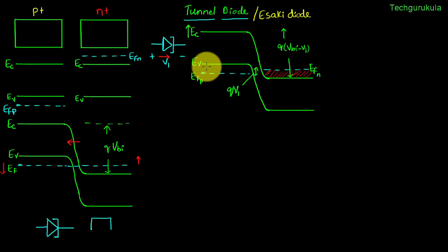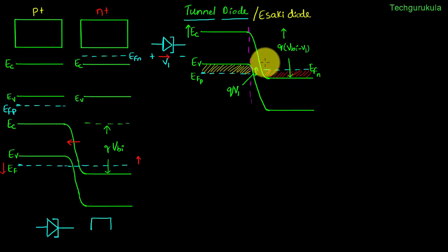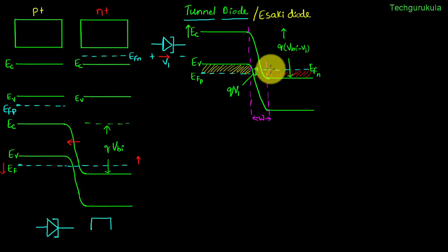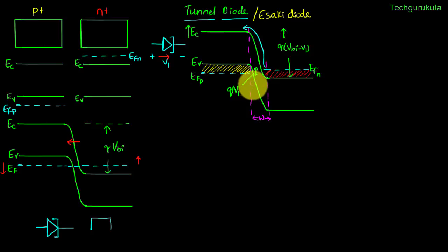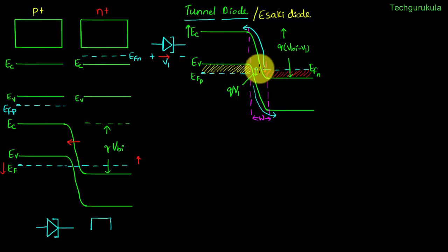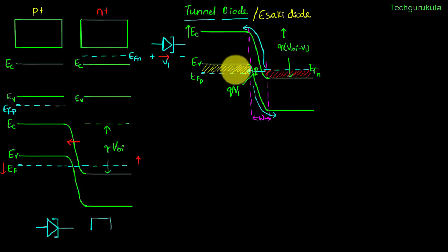On the p-side the Fermi energy level will have a lot of holes. Because the diode is heavily doped, the depletion width would be really very small — typically in tunnel diodes it would be in a few angstroms or nanometers. In general, electrons are supposed to surmount the barrier to go to the other side. But in this case, electrons are at a particular energy and there are a lot of empty states on the other side separated by a very small barrier width. So instead of surmounting the barrier, electrons go directly through the barrier. This phenomenon is called tunneling.